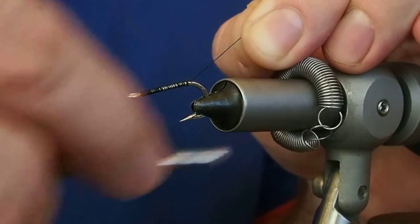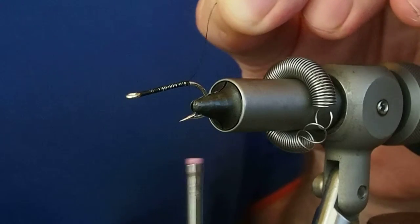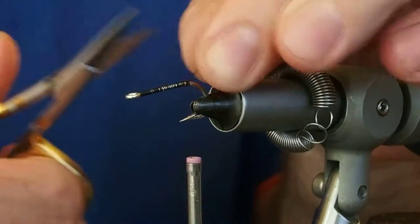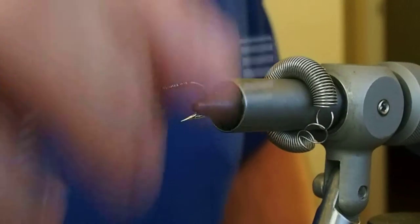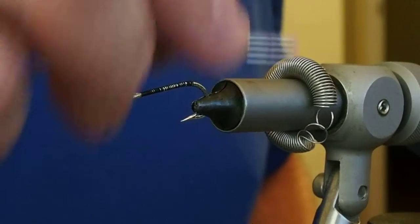We want to take the thread, snip our tag here, and then take our thread down halfway down the bend.